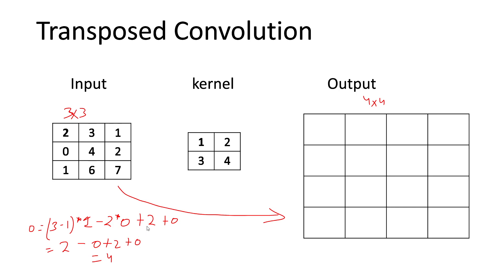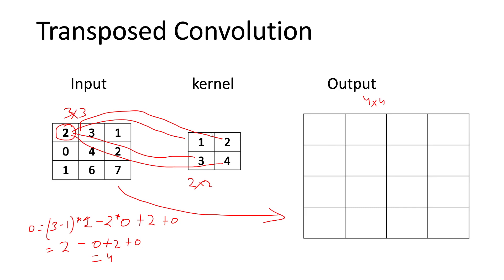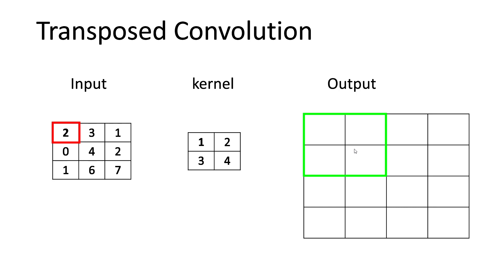Let's assume the input is 3x3 and the kernel is 2x2. How transposed convolution works: it takes one particular input element and multiplies it with all values of the kernel. So the element '2' multiplies with 1, 2, 3, and 4 from the kernel. The outputs are: 2×1=2, 2×2=4, 2×3=6, 2×4=8. These values are written into the output at the corresponding position.